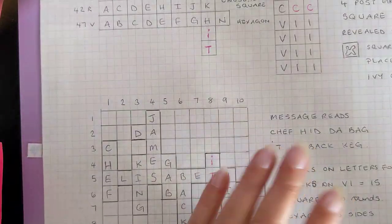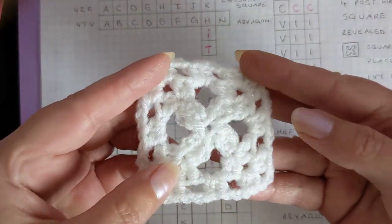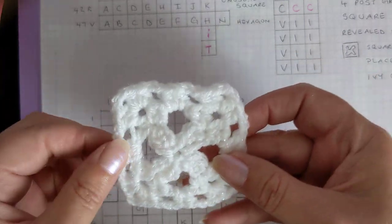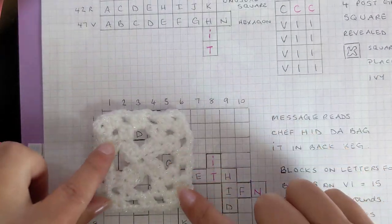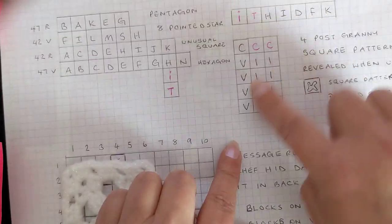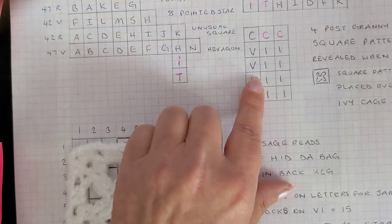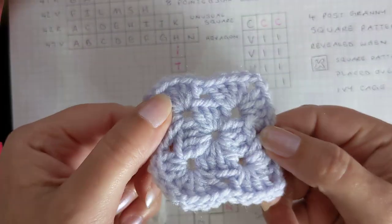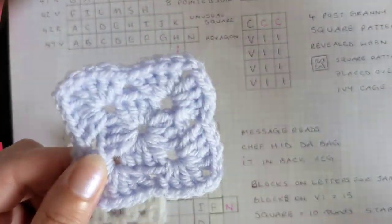I carried on following the clues that I've been having to do. This is the unusual square to this size. If you cover it over the grid, it actually leaves you with the letters which you can turn into a crochet pattern which reveals the four post granny square.